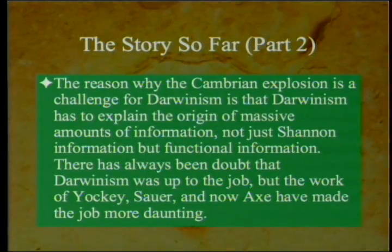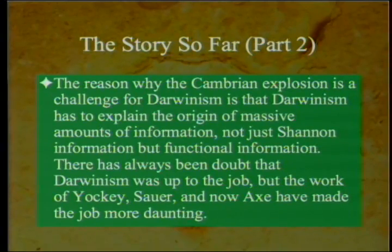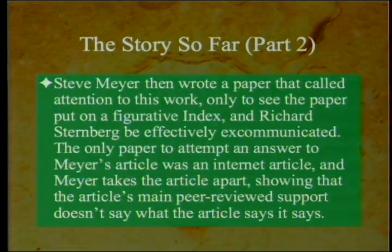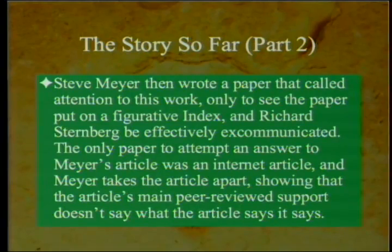The reason the Cambrian explosion is a challenge for Darwinism is that Darwinism has to explain the origin of massive amounts of information—not just Shannon information, ones and zeros, but functional information: A, T, G, and C that does something. There's always been doubt that Darwinism was up to the job, but the work of Yaqui Sauer and now Axe have made the job much more daunting. Steve Meyer, after one of Axe's more important works, wrote a paper calling attention to it, only to see the paper put on a figurative index and Richard Sternberg effectively excommunicated.